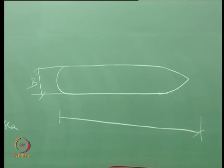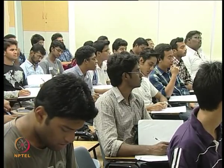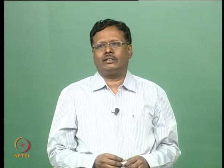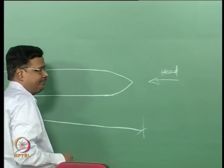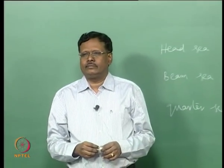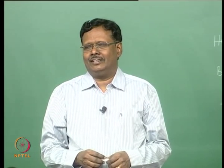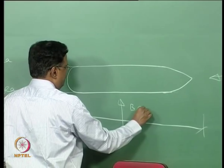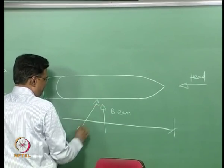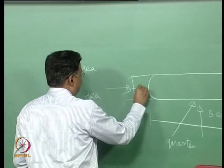Ocean engineering students — which direction should the wave come for head sea conditions? From right to left. For beam sea, it is bottom to top or top to bottom — anything is okay. For quarter sea, it is at an angle — any direction. And when the wave comes from behind, this is called the following sea.